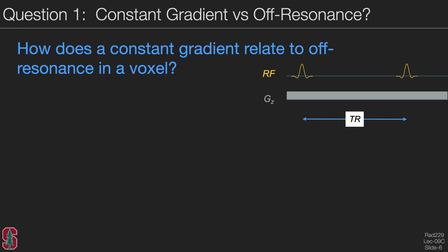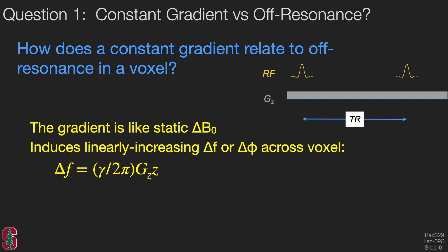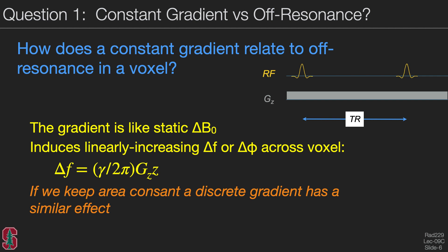If we have a constant gradient on, as shown in the pulse sequence diagram, how does this look compared to off resonance? The answer is that the gradient acts like a static field inhomogeneity — it is not changing over time. It induces a linearly increasing delta frequency or delta phase across a voxel. The delta frequency is expressed as gamma over 2 pi times the gradient strength times the position. A discrete gradient can have a similar effect if placed partway along the TR.